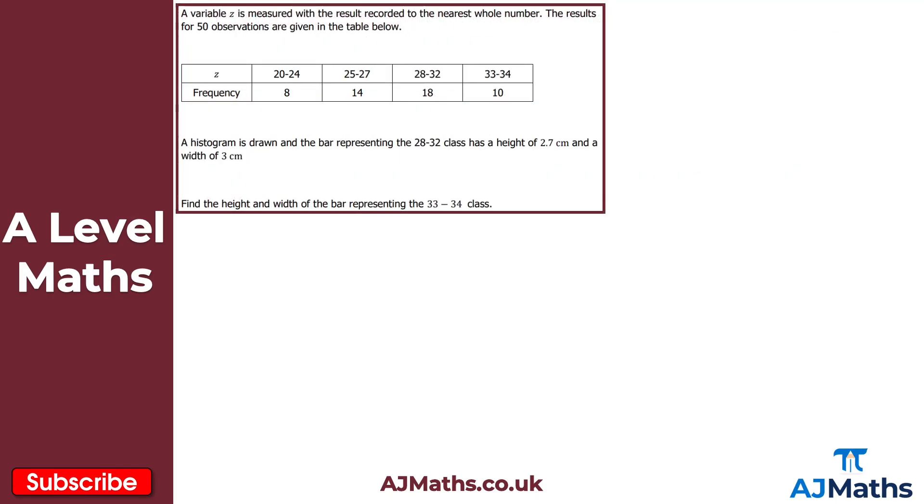So if we just take a look at this one practice question for histograms. What we have here is a variable Z that is measured with the result recorded to the nearest whole number. The results for 50 observations are given in this table below. We're then told that a histogram is drawn and the bar representing the 28 to 32 class has a height of 2.7 cm and a width of 3 cm.